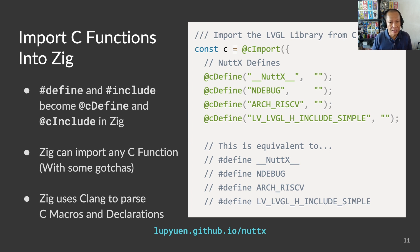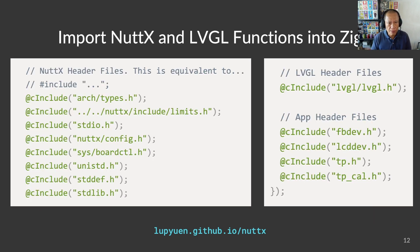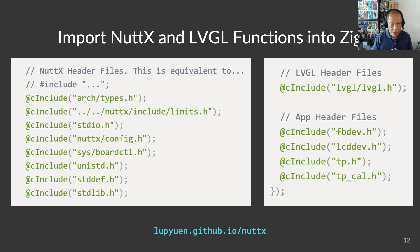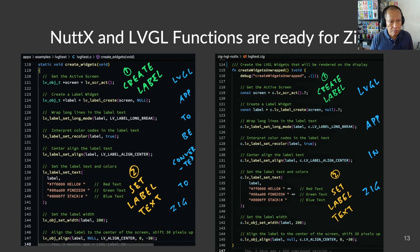How is it possible that Zig can understand C macros and declarations? That is because Zig calls the Clang compiler to parse C macros and declarations, which makes it really easy to import C functions into Zig. For C declarations, we change #include to @cInclude. With this couple of lines of code, we have imported all the C header files that we need for NuttX, LVGL, and our app. I ran into some macro problems without the type.h and limits.h lines, so I added them — could be a problem with Clang. That's all for importing C functions into Zig. No wrappers needed.